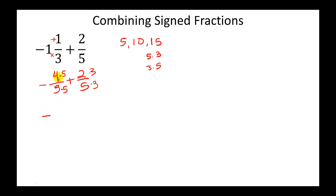So we have a negative 4 times 5 is 20, 3 times 5 is 15, and 2 times 3 is 6, 5 times 3 is 15.